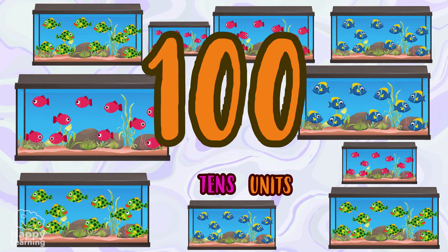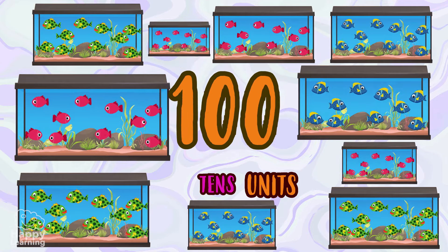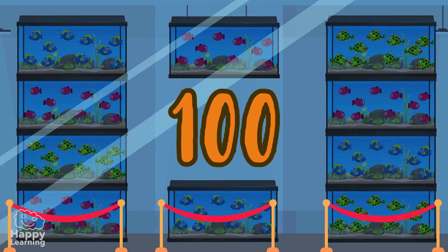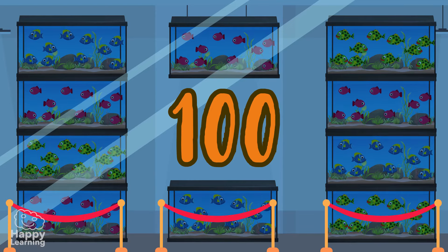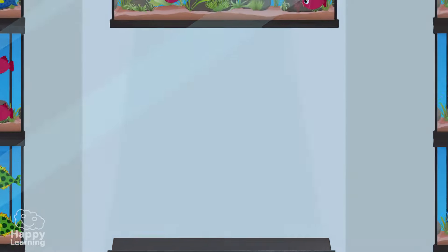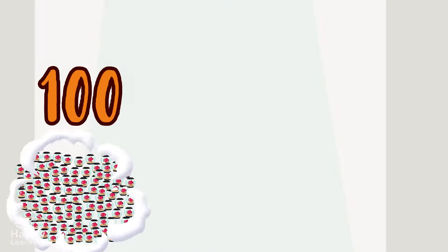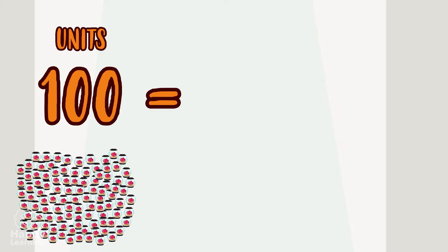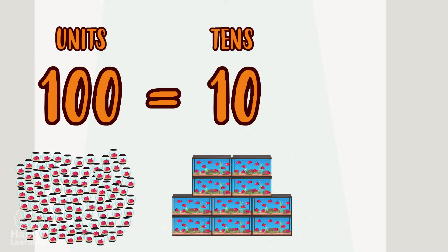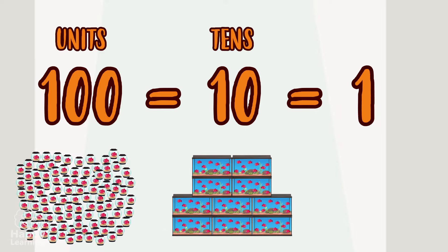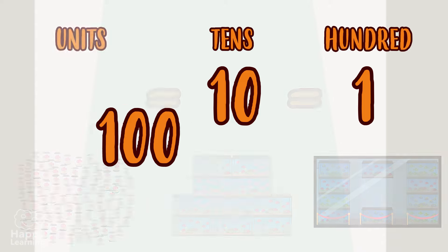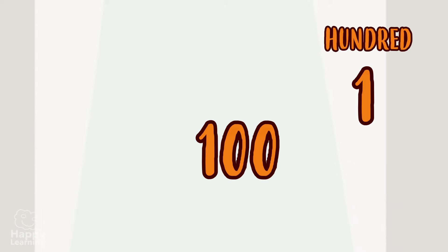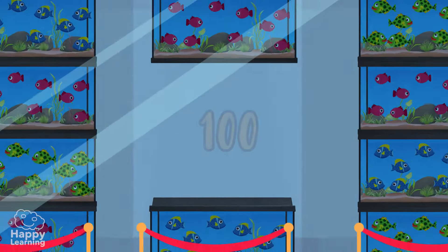One more ten and we would have one hundred — one hundred units, one hundred fish! Oh, how wonderful. That would be equal to ten tens, or a hundred. There are so many fish. I wish we could keep them all.